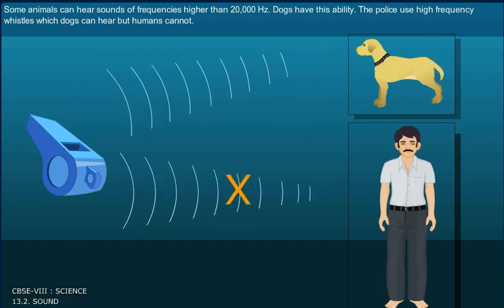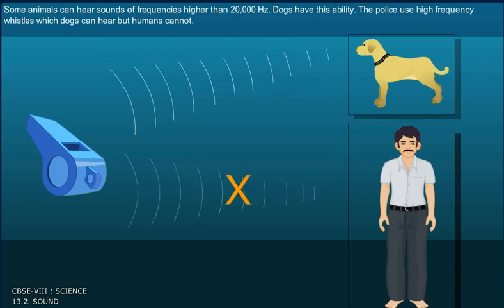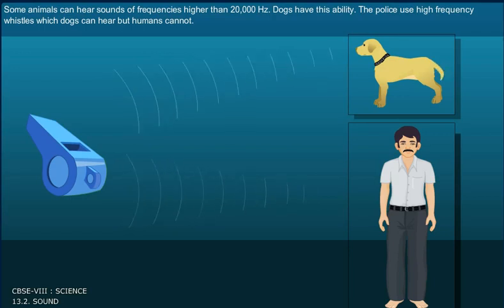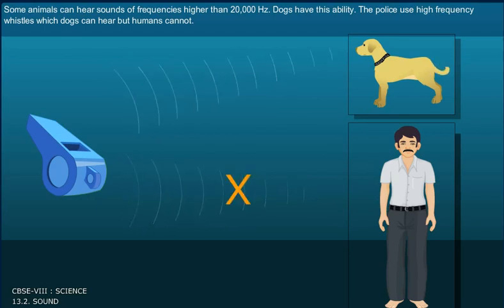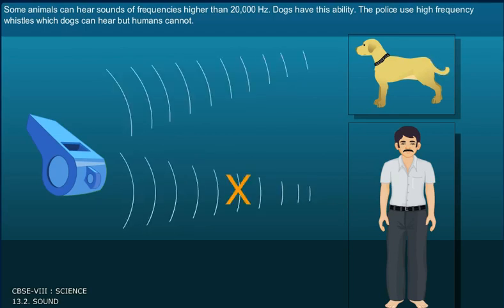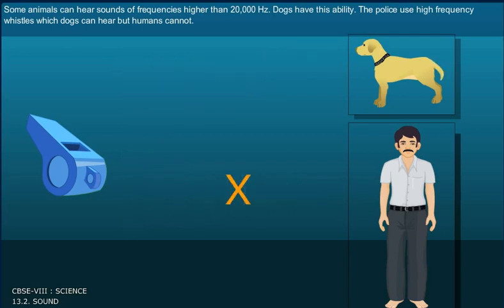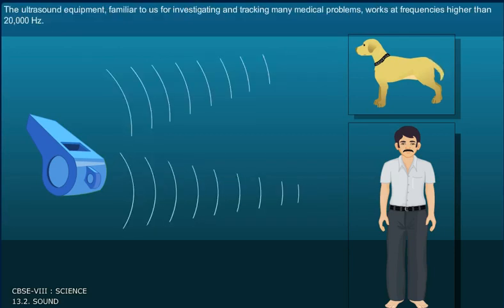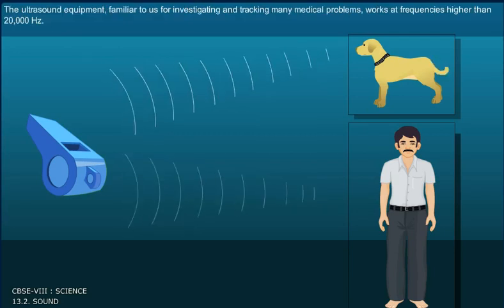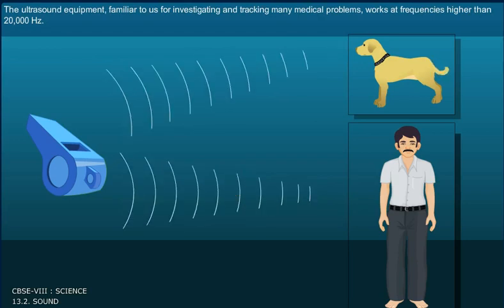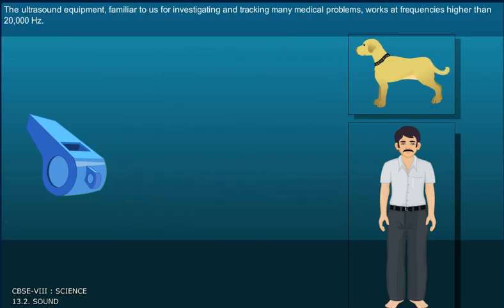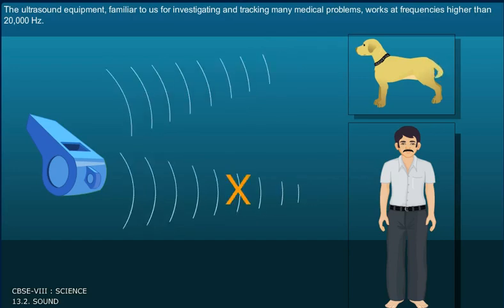Some animals can hear sounds of frequencies higher than 20,000 Hertz. Dogs have this ability. The police use high frequency whistles, which dogs can hear, but humans cannot. The ultrasound equipment, familiar to us for investigating and tracking many medical problems, works at frequencies higher than 20,000 Hertz.